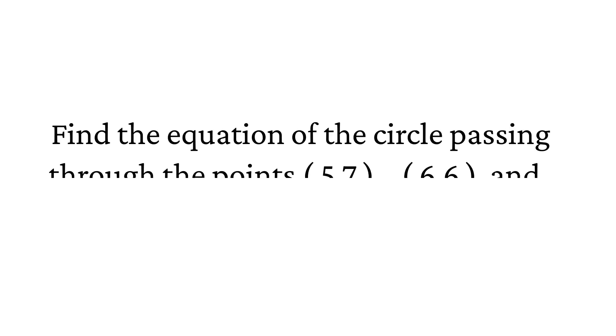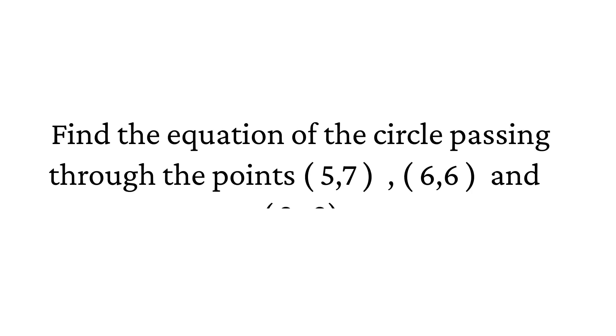Find the equation of the circle passing through the points (5, 7), (6, 6), and (2, -2). Let us consider a circle where C is the center of the circle with coordinates (h, k).